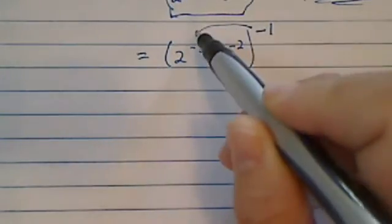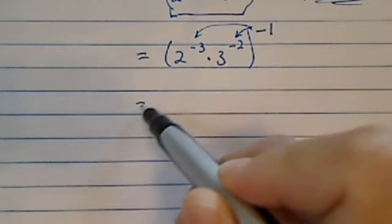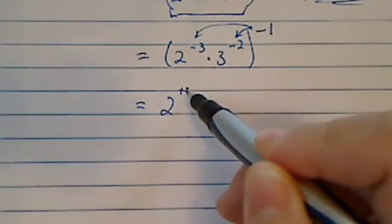From here, the quickest way, of course, is this minus 1 gets distributed in there, so you have 2 to the positive 3 times 3 to the positive 2.